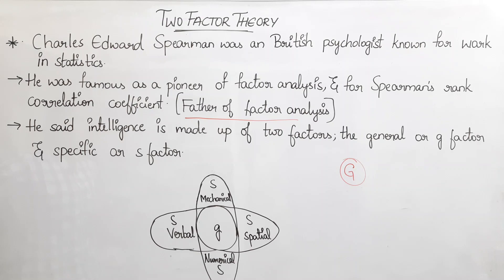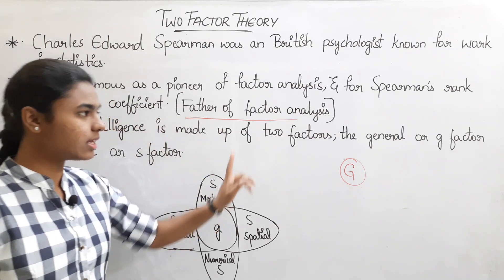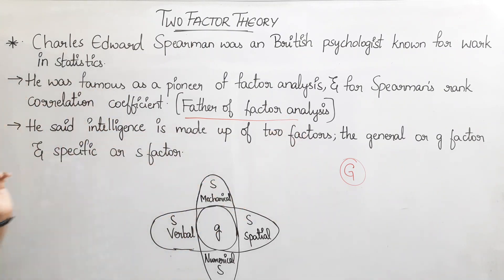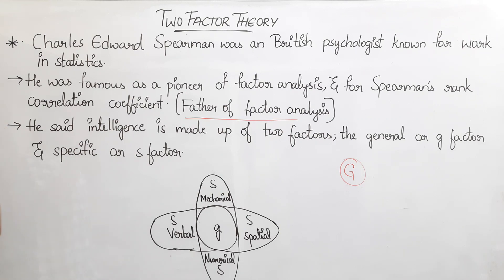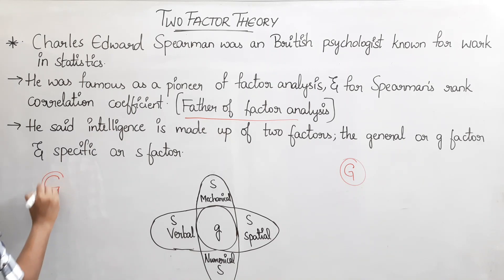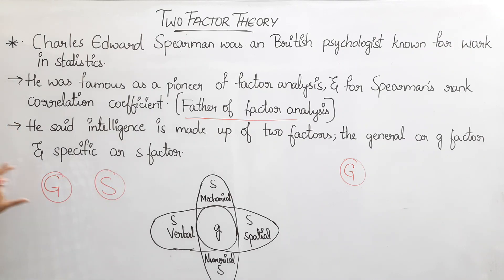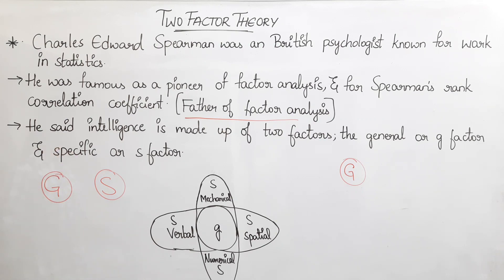In two-factor theory, Charles Edward Spearman said that intelligence is made up of two factors: the general or G-factor and the specific or S-factor. The G-factor is the general factor and the S-factor is the specific factor.